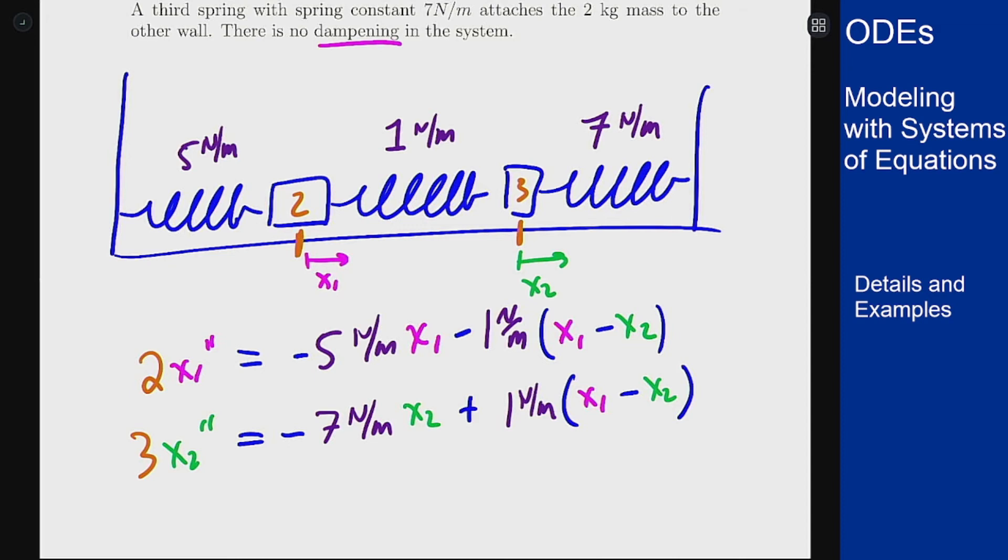So this now gives me a setup for a second order system that would model how this mass spring setup would behave. We haven't looked at how to solve these things, that's entirely fine, but the point is you could set this up by looking at the different setup, which way the forces go, and how they all interact to build a model for this kind of situation.